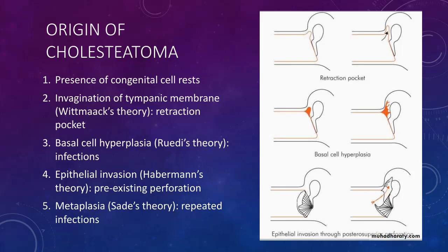This happens especially in the case of marginal perforation where the annulus tympanicus has already been destroyed. The next theory is Sade's theory. Here, there is metaplasia due to repeated infections and the middle ear mucosa transforms into squamous epithelium.